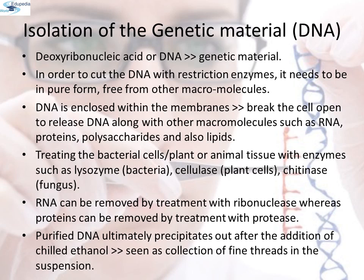Genes are located on long molecules of DNA intertwined with proteins such as histones. RNA can be removed by treatment with ribonuclease, whereas proteins can be removed by treatment with proteases. Other molecules can be removed by appropriate treatments, and the purified DNA ultimately precipitates out after addition of chilled ethanol. This can be seen as the collection of fine threads in the suspension.